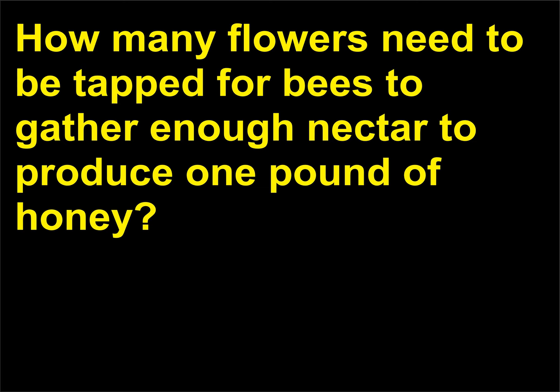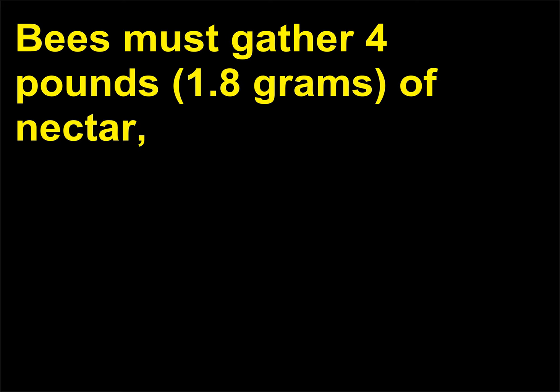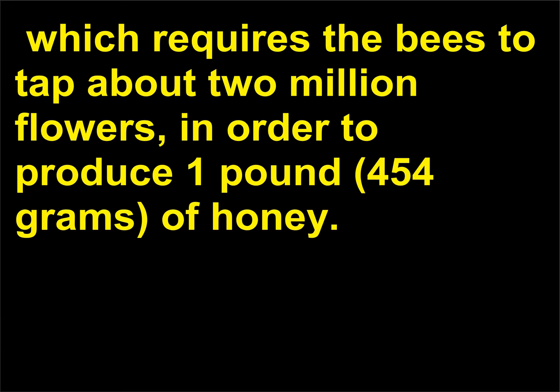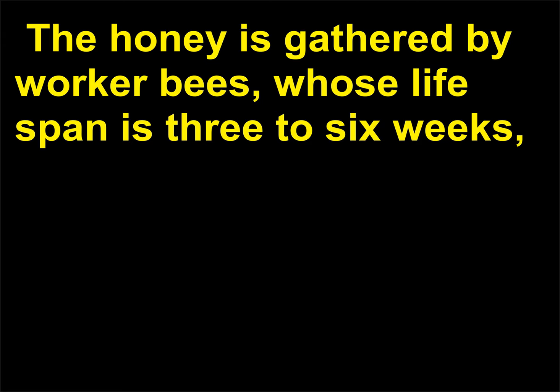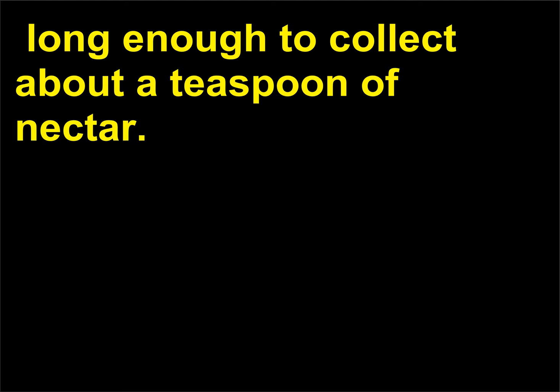How many flowers need to be tapped for bees to gather enough nectar to produce one pound of honey? Bees must gather four pounds, 1.8 kilograms, of nectar, which requires the bees to tap about 2 million flowers, in order to produce one pound, 454 grams, of honey. The honey is gathered by worker bees, whose lifespan is 3 to 6 weeks — long enough to collect about a teaspoon of nectar.